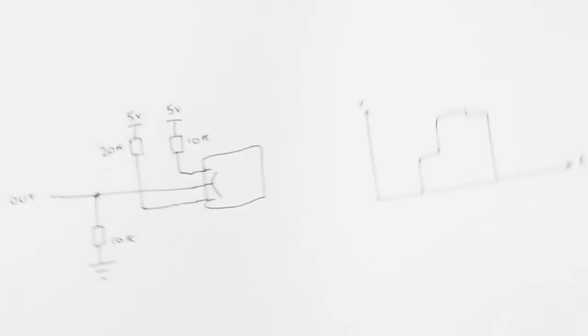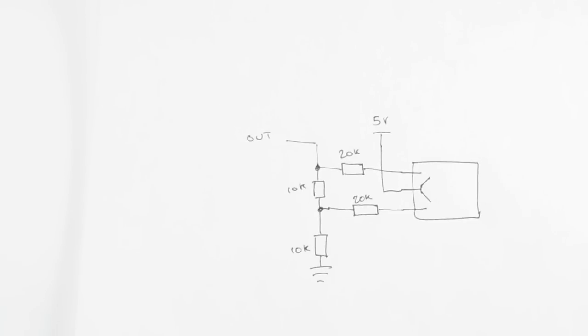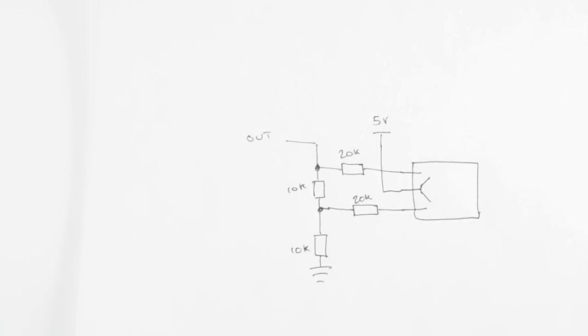So my next idea was to make two rungs from an R2R ladder DAC. But this still won't give us totally linear steps, because this is intended to work with pins that go from high to low, whereas we're going from high to open.